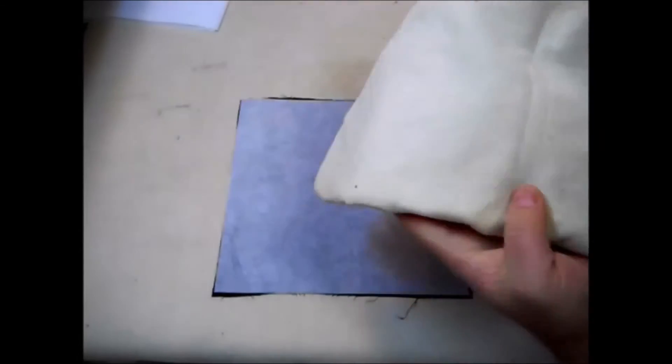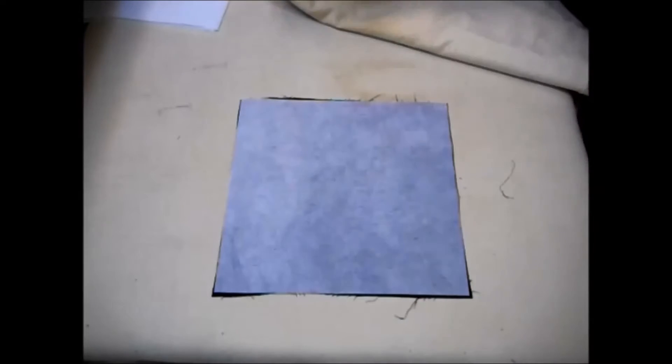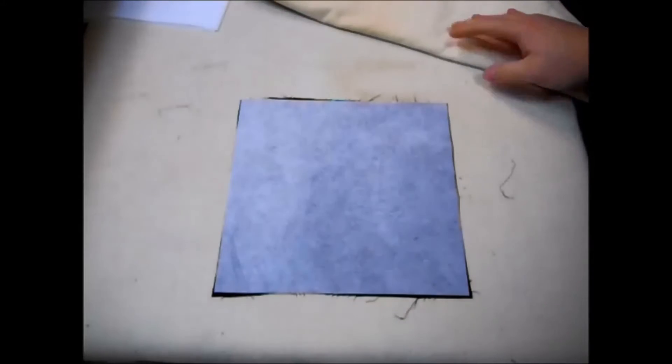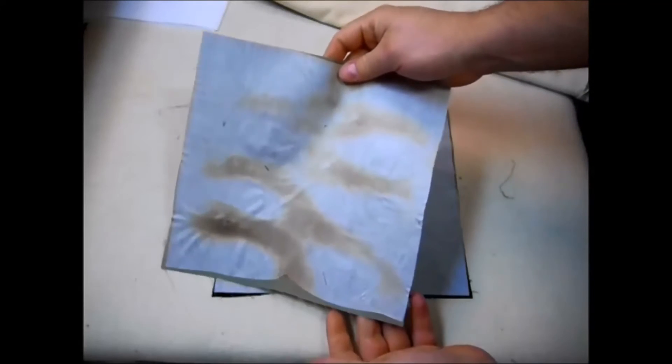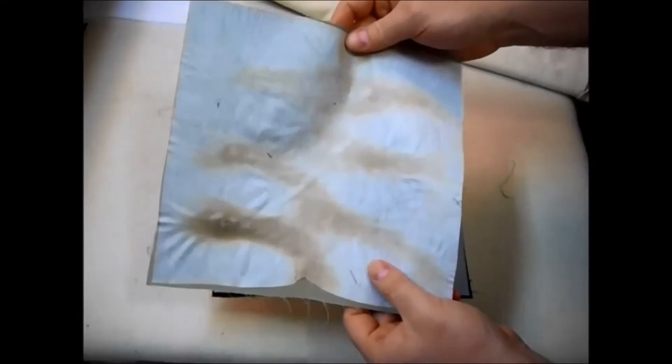Following the directions on the paper that comes with your pellon you want to iron this on. For this kind it says with an iron set on wool steam press firmly in place for a full ten seconds. Repeat lifting and slightly overlapping iron until all interfacing is fused down. You also want to use a pressing cloth. I just use a piece of fabric here that I've used and it's pretty dirty but it helps. If you don't you might end up with something like this. I make these mistakes for you people.